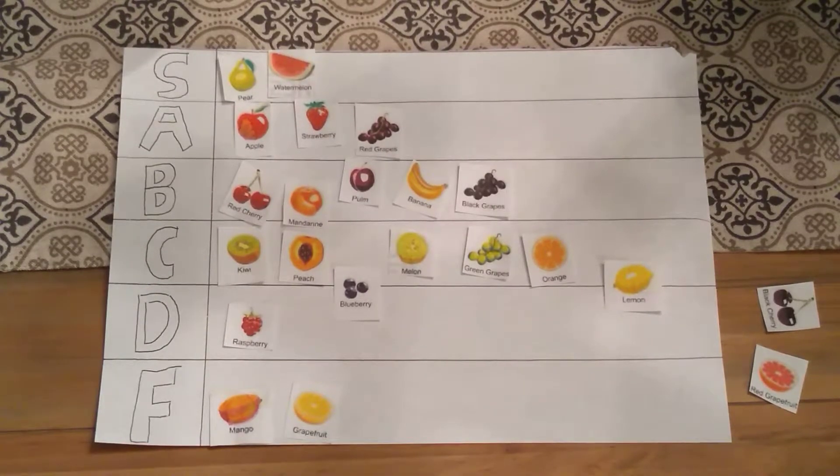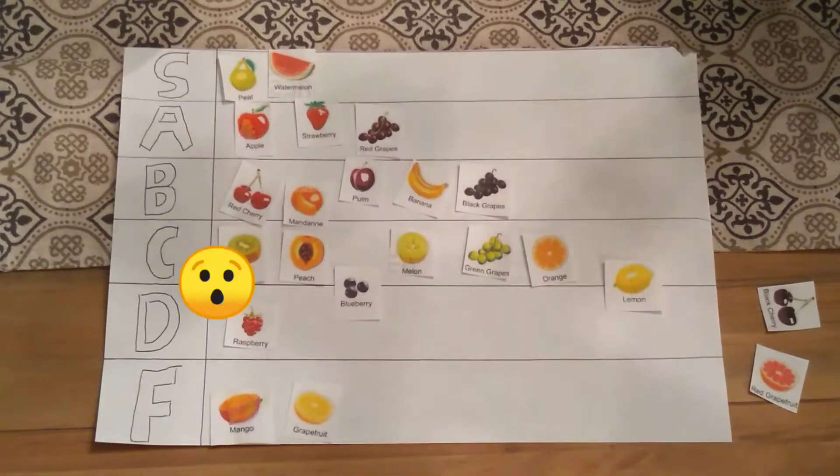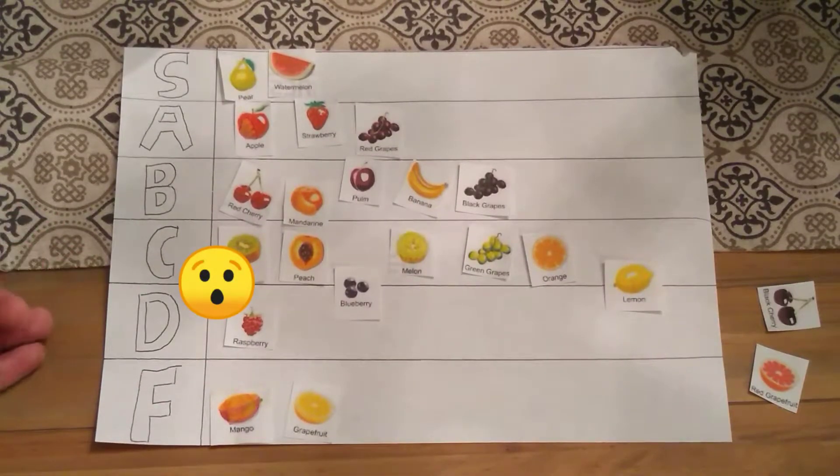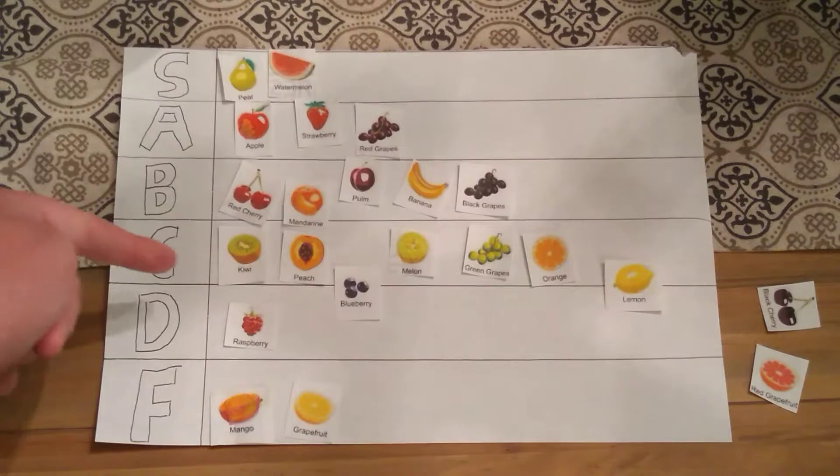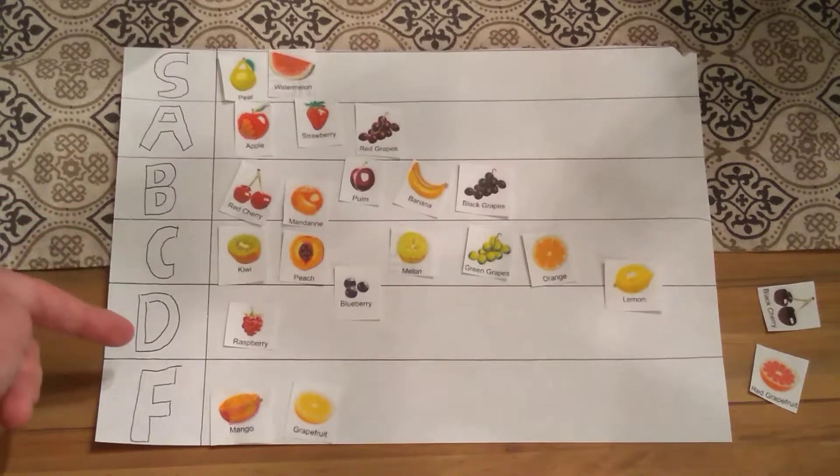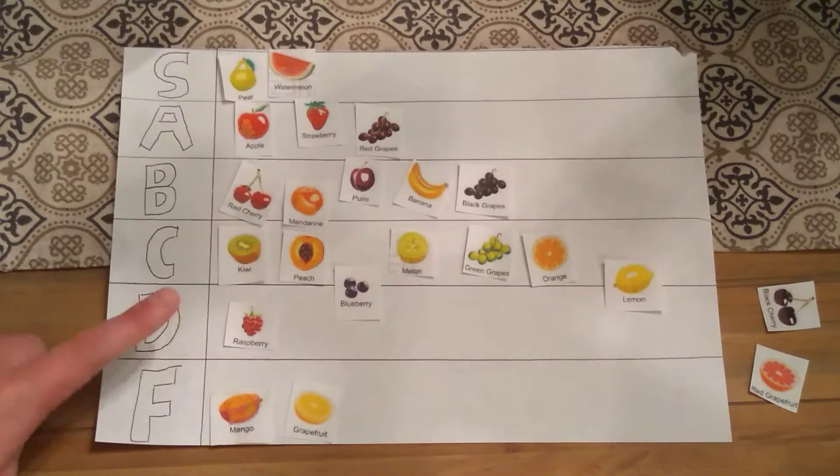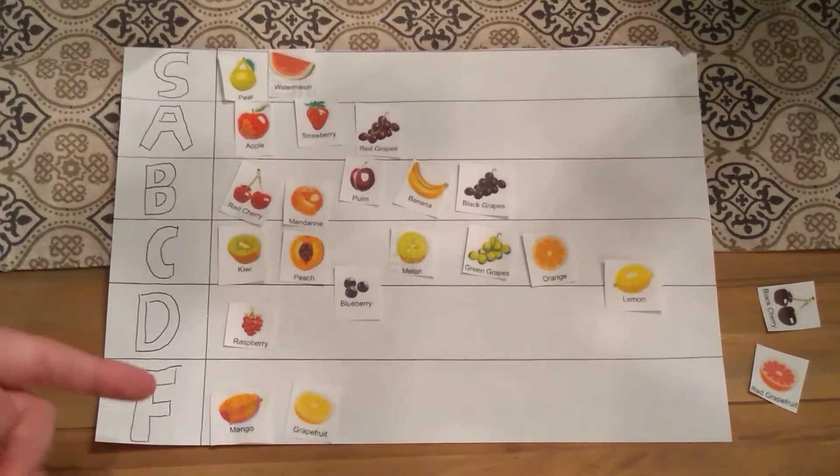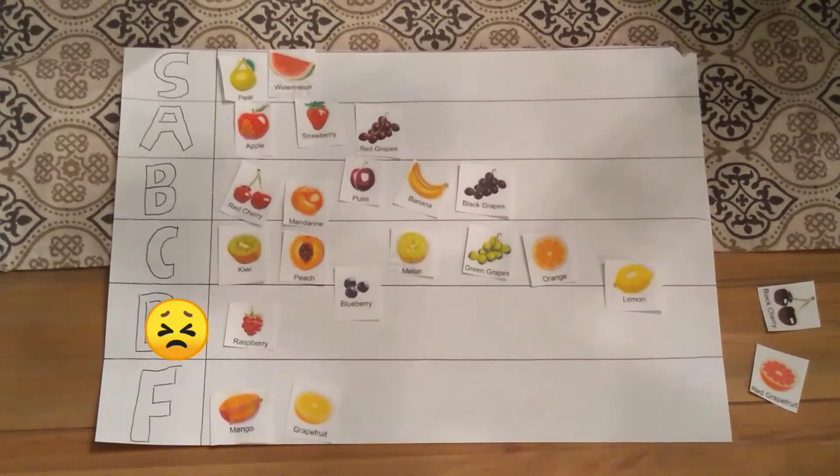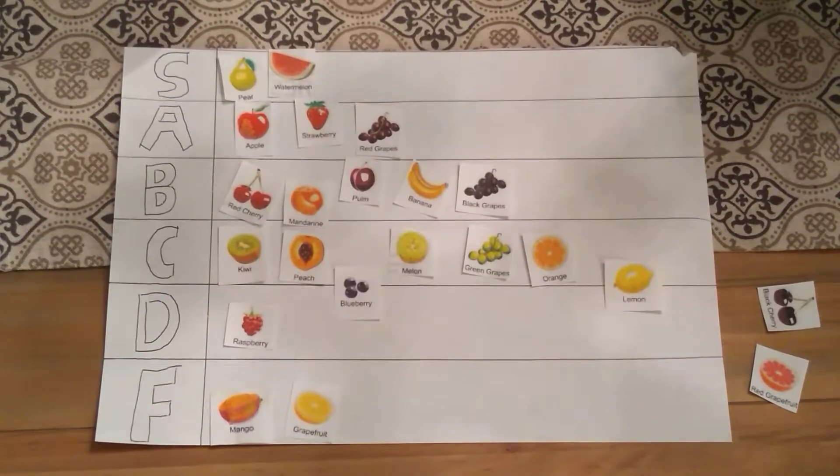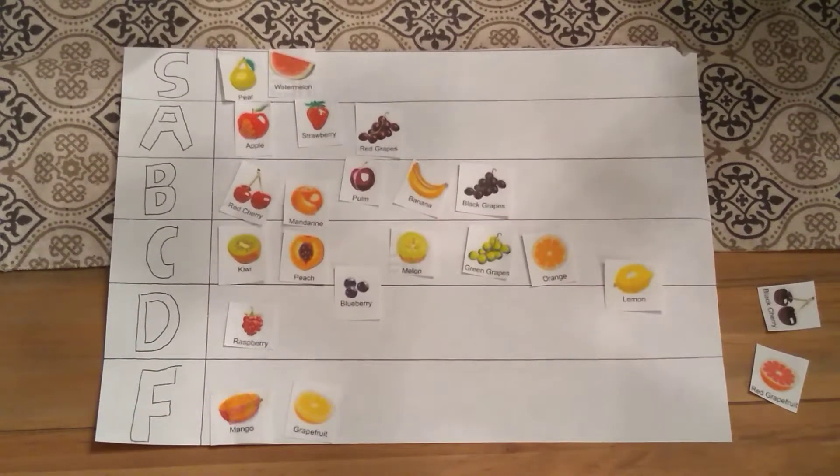In the C minus slash D plus tier, we have blueberries and lemons. Which are slightly less good than C tier. But, slightly better than D tier. In D tier, the only one that's here is raspberries. I don't like raspberries. But, they're not terrible. If you offered me to eat a raspberry, I'd politely say no thank you.